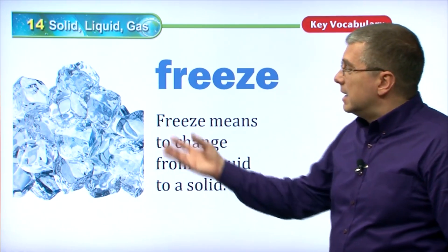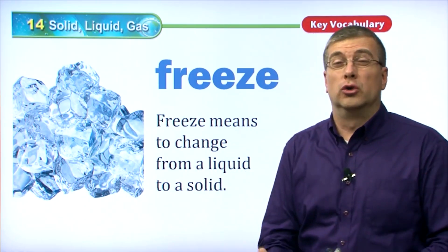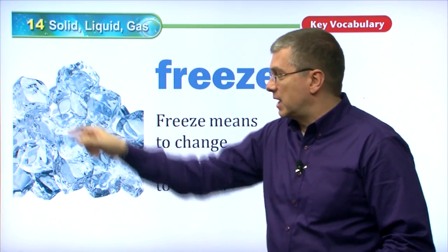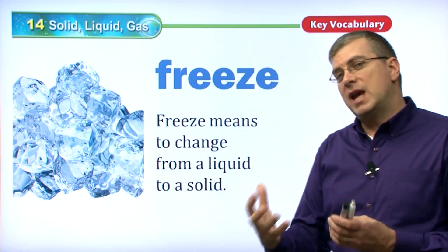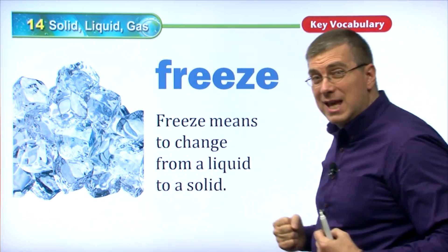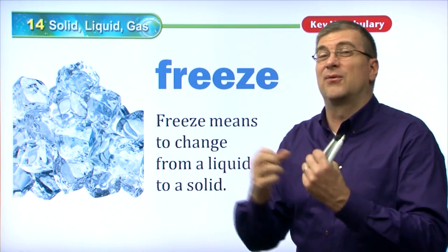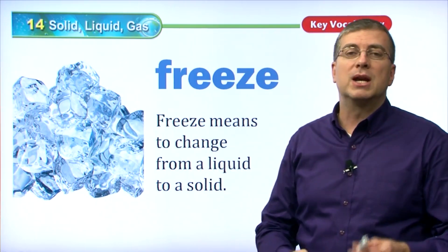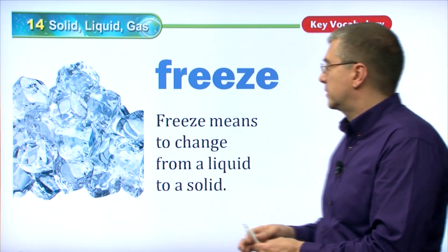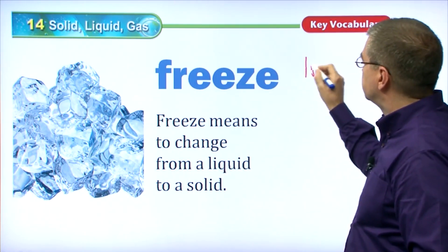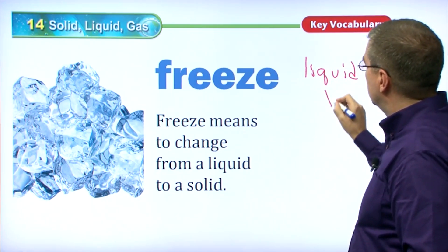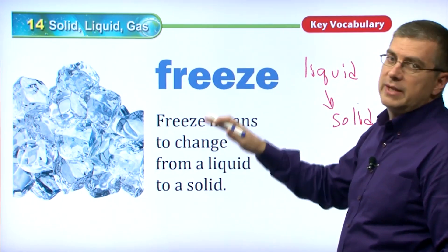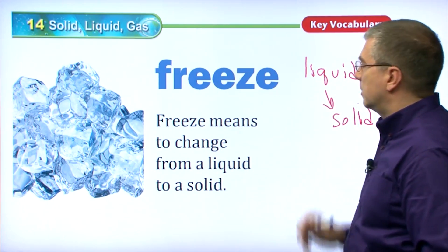Freeze has to do with very cold temperatures. If you freeze something, you change it from a liquid to a solid. Here's our example of water again. If you take liquid water and you take away heat — you lower the temperature — what happens? It freezes and becomes a solid; it is now ice. So when you freeze something, it goes from a liquid to a solid. When we say it's freezing outside, that means the temperature is so low that liquid water will turn into ice.